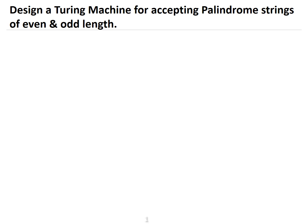Today we will be discussing one of the important problems on Turing machines. You can expect this question in any competitive exam, even for your main exam. The statement of the problem is: design a Turing machine for accepting palindrome strings of even and odd length. That means we are not designing a Turing machine for only even or odd length — we will be designing it for both.